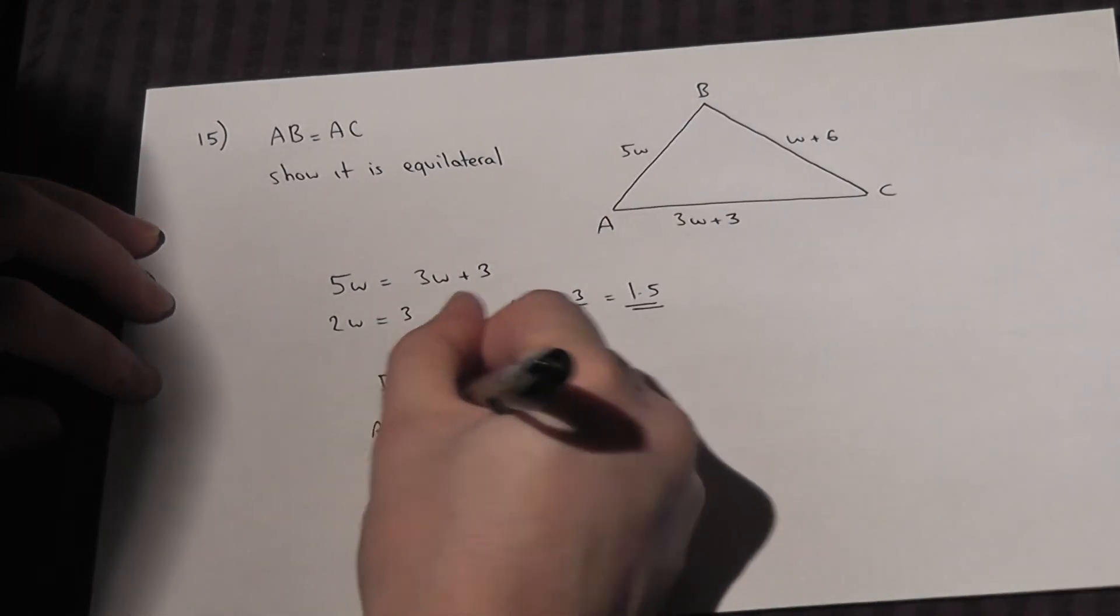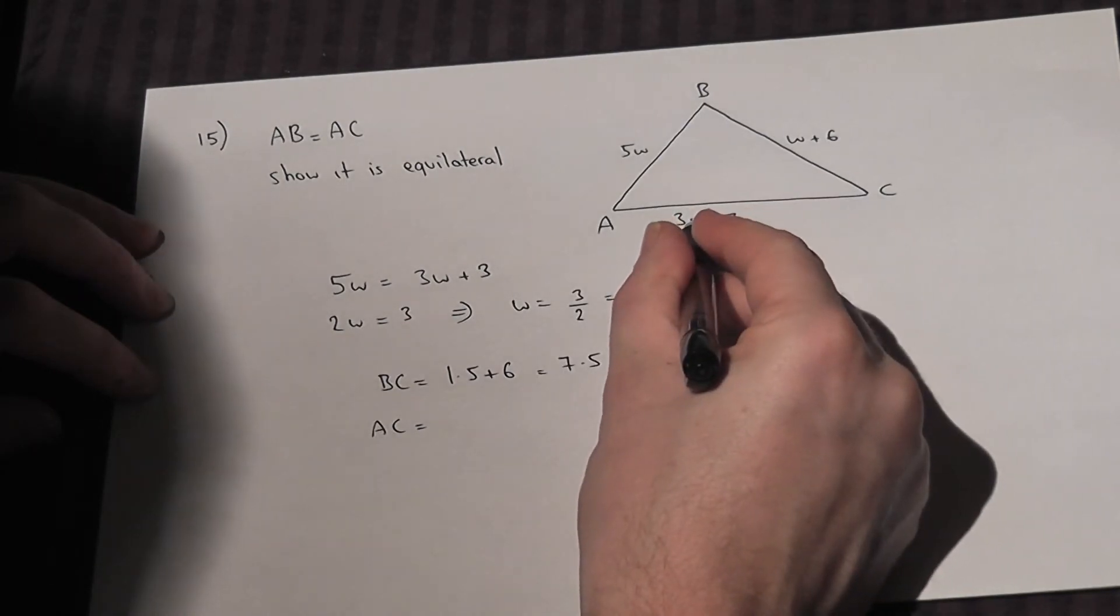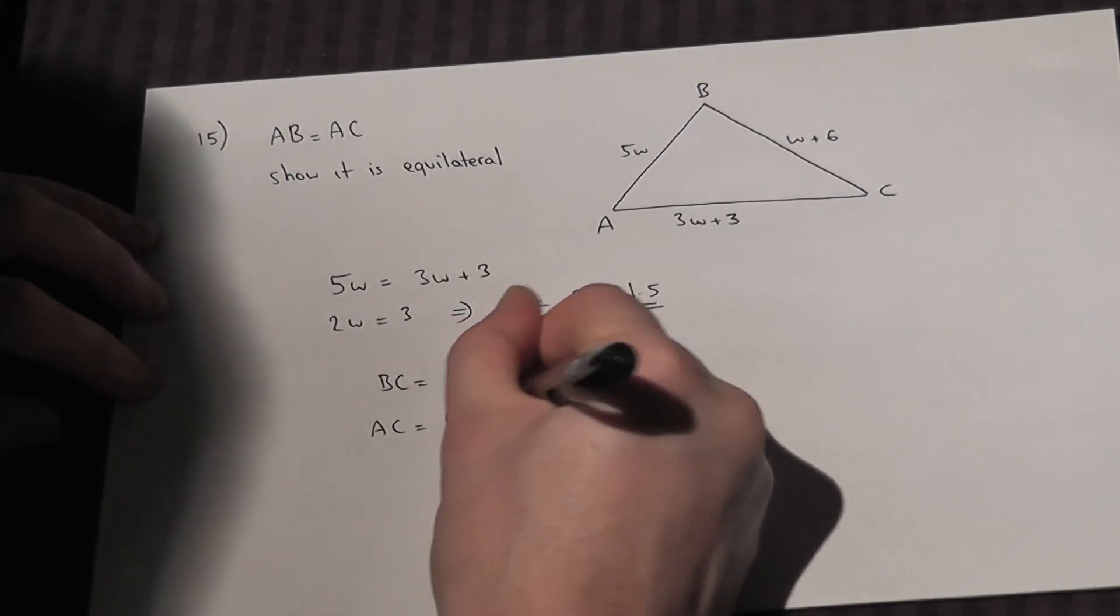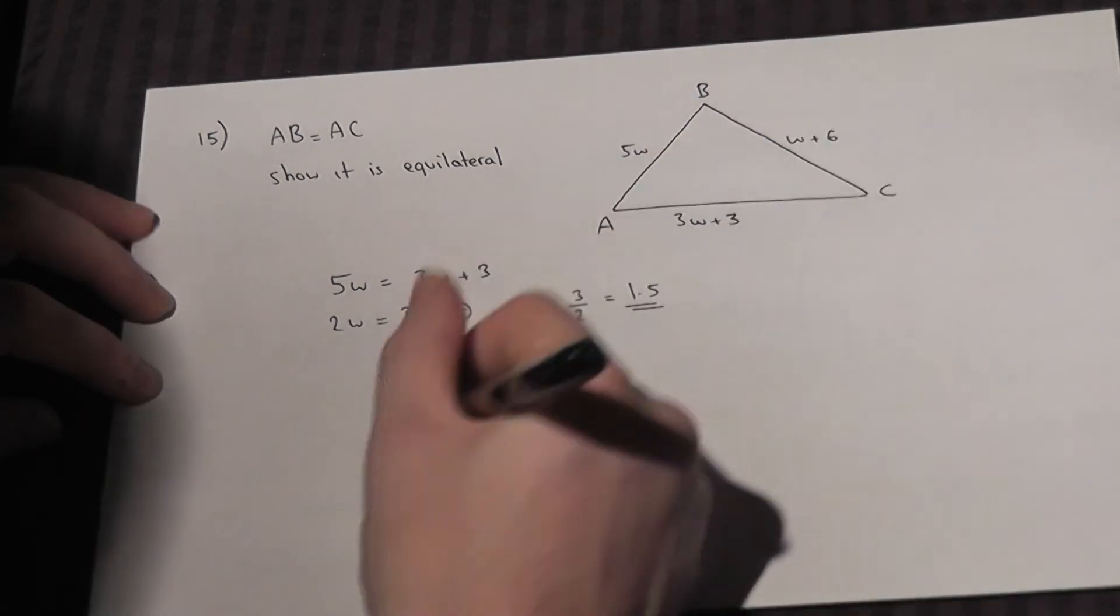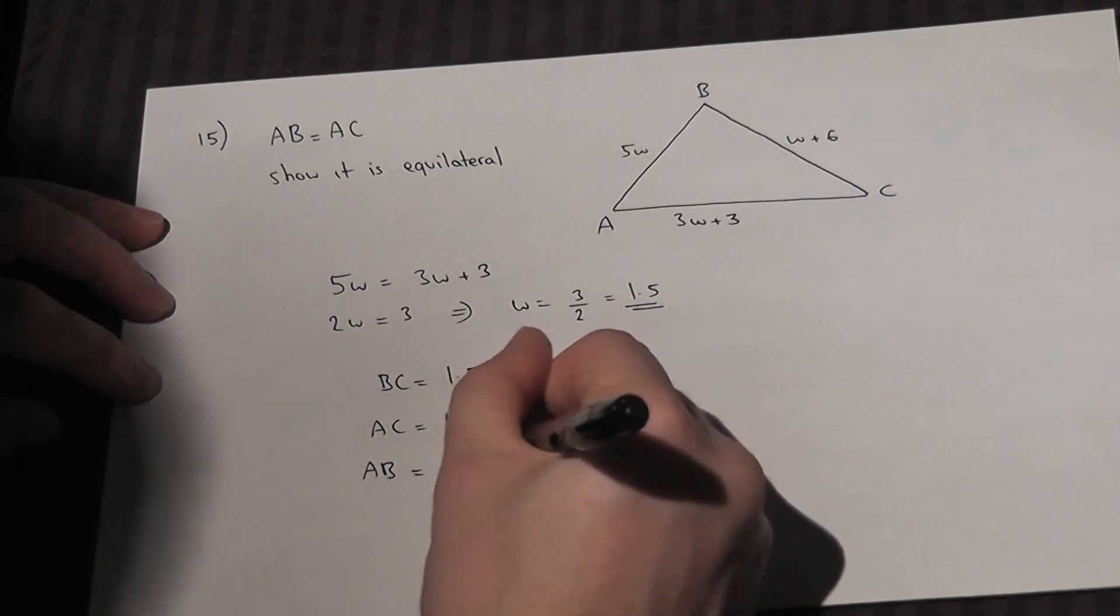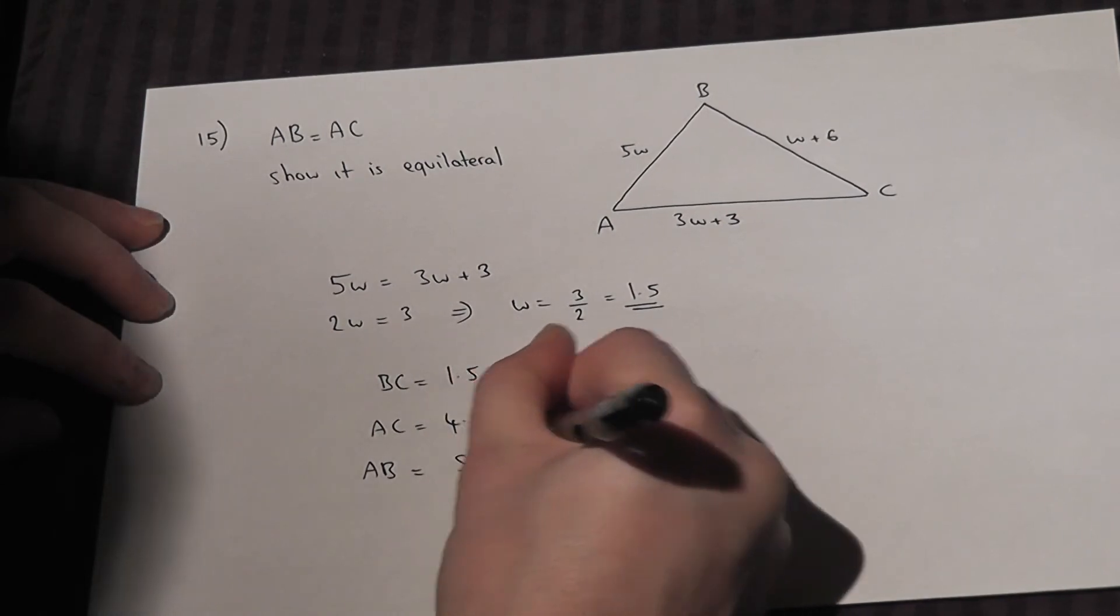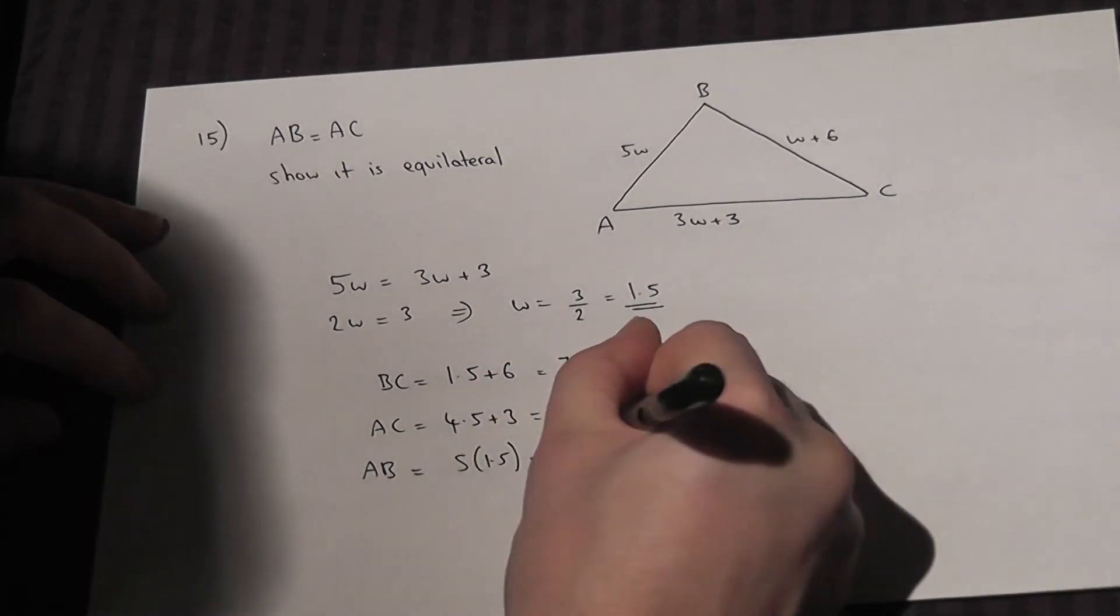AC, that will equal 3 times W, which is 4.5, plus 3, which is also 7.5. And AB will equal 5 lots of W, which is also 7.5.